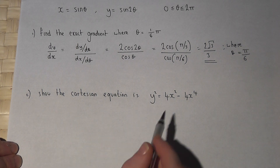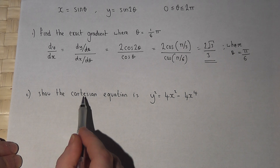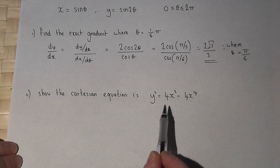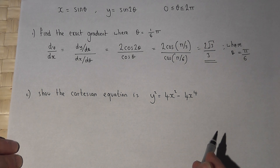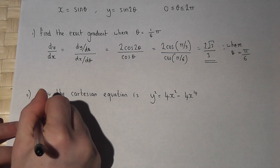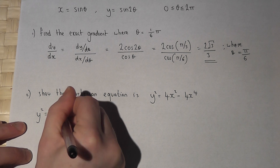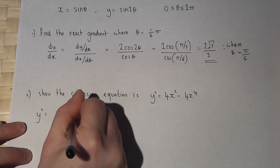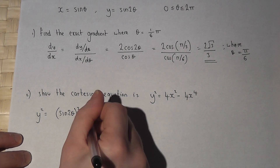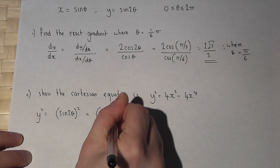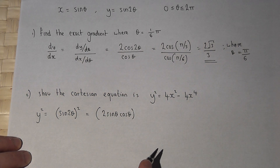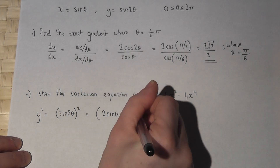The second part says: show that the Cartesian equation is given by y squared equals 4x squared take away 4x to the power of 4. We know that y equals sine 2 theta, so y squared equals sine 2 theta all squared. Now sine 2 theta is the same as 2 sine theta cos theta — that's one of the double angle rules — so that's squared.